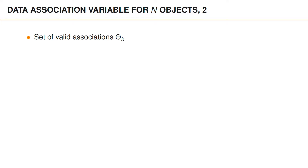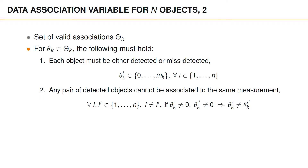The set of valid associations, capital Theta, is more complicated in n-object tracking compared to single-object tracking. For a valid association, two things must hold. First, each object must either be detected or misdetected, meaning Theta_i must belong to the set of integers from 0, 1, 2, up to m_k, for all object indices i. Second, any pair of detected objects cannot be associated to the same measurement — for all object indices i and i' where i ≠ i', if Theta_i ≠ 0 and Theta_i' ≠ 0, then it must hold that Theta_i ≠ Theta_i'.